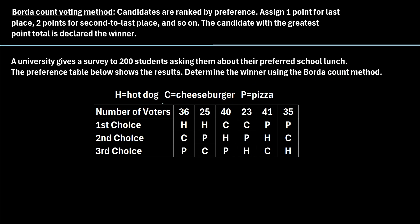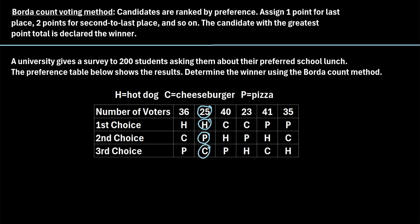Here's how to interpret this preference table. Wherever you see an H, that stands for hot dog, so the student chose hot dog as their preferred lunch. C represents cheeseburger, and P represents pizza. For example, 36 students chose this specific order: hot dog as their first choice, cheeseburger as their second choice, and pizza as their third choice. Similarly, 25 students chose hot dog first, pizza second, and cheeseburger third.